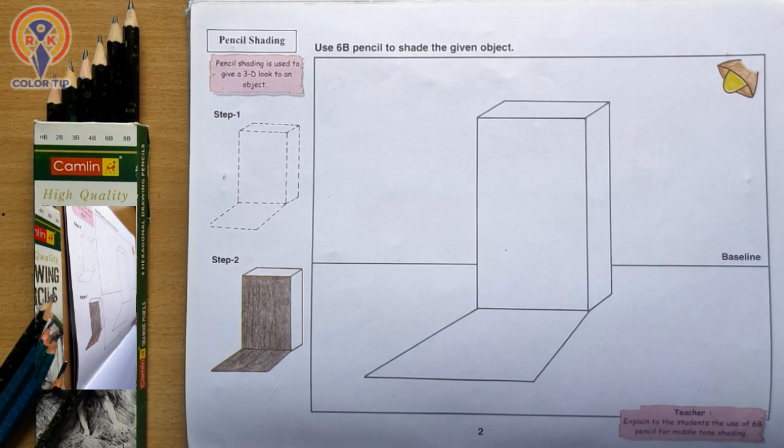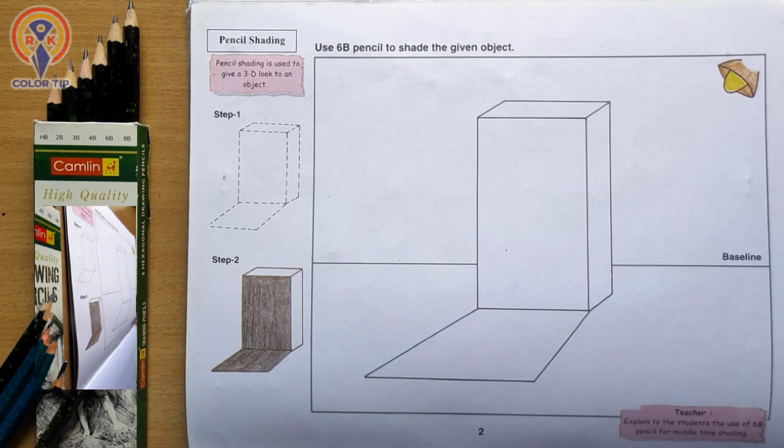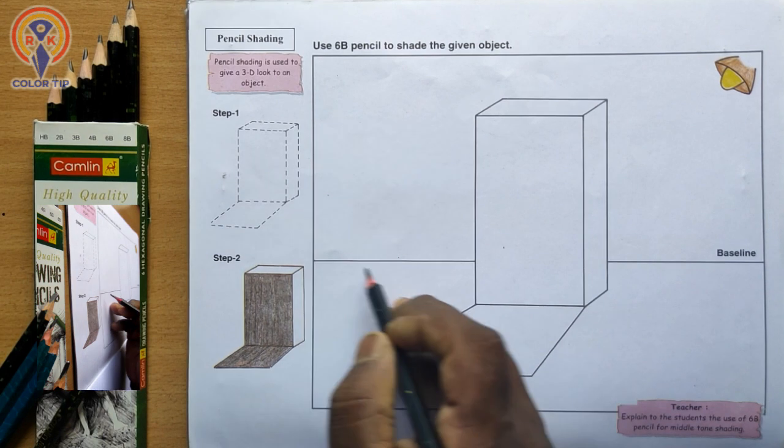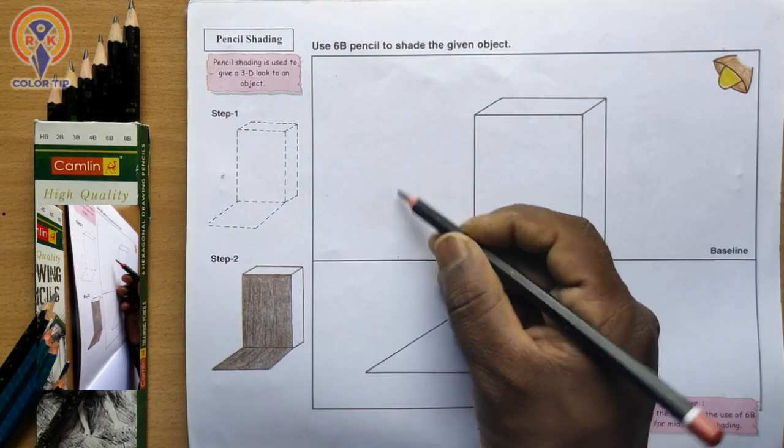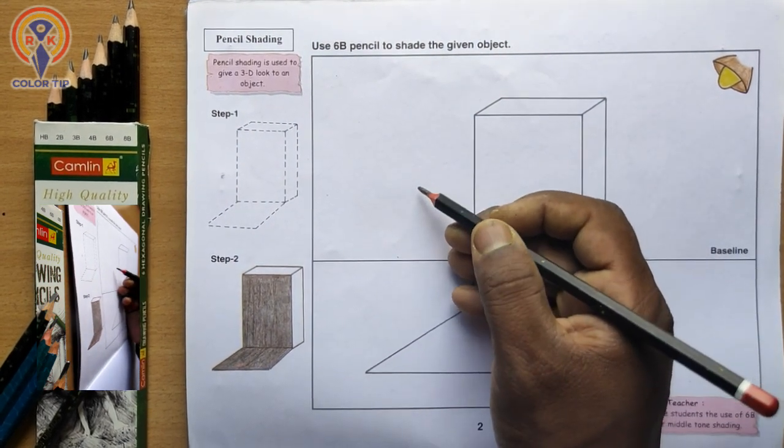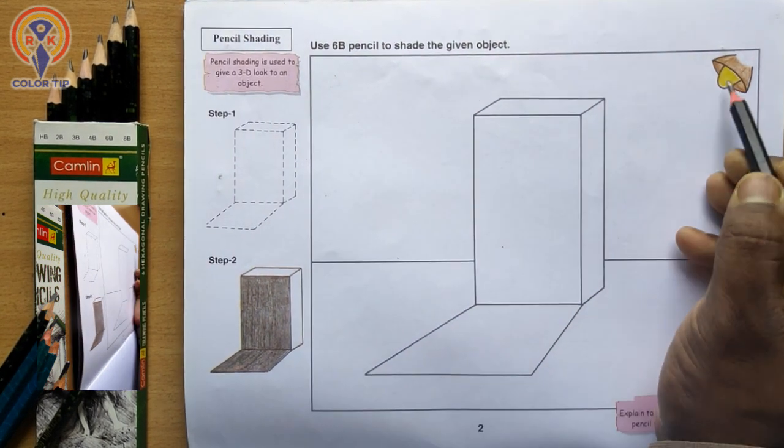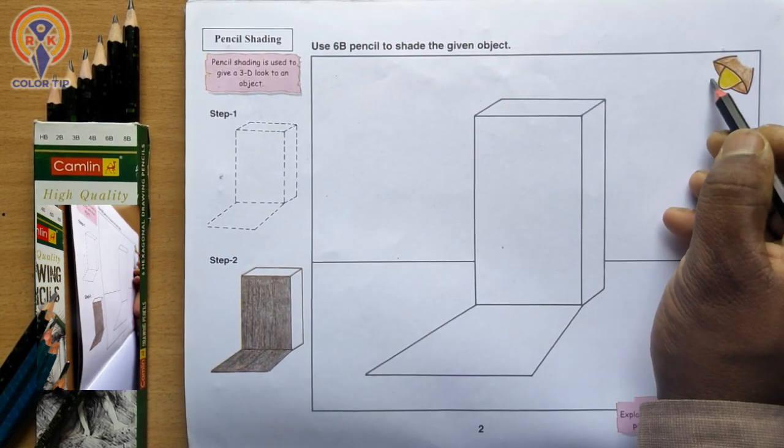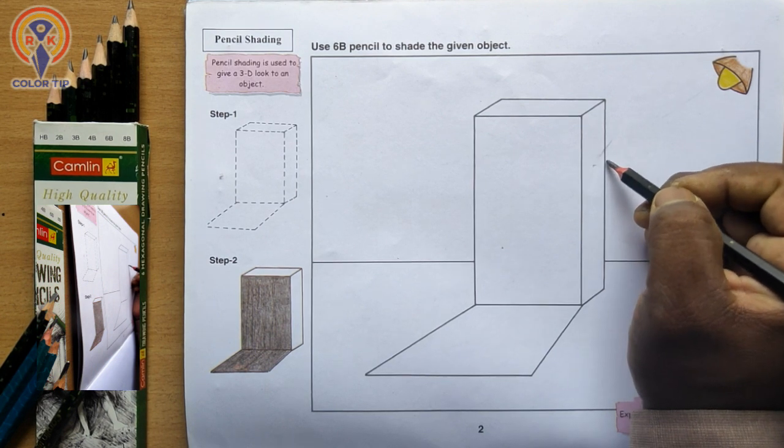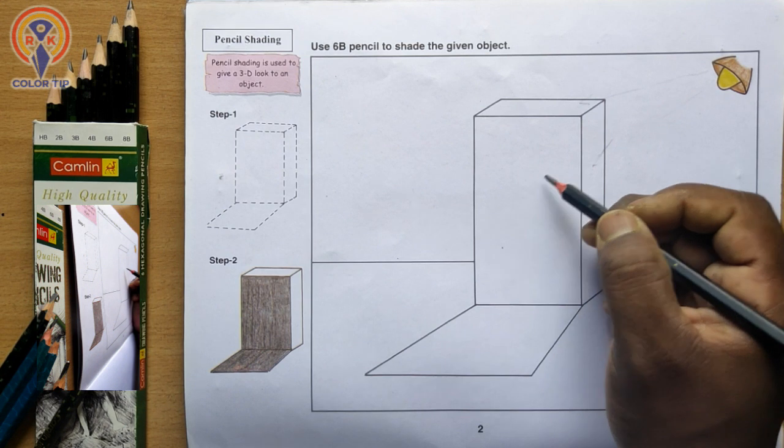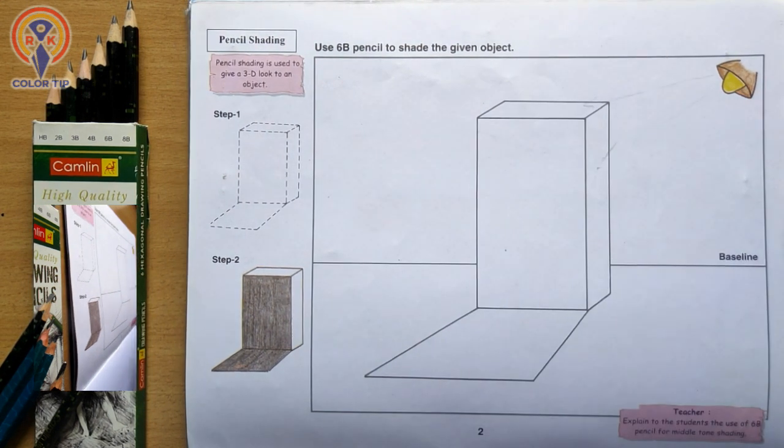A cuboid showing the light source from the top right corner, and the shadow is on the opposite side. An example is given here - a cuboid with a baseline. Above the baseline we call this part background, and below the baseline we call it foreground. Light is placed here. The light source may reach this part and this one, but this face is completely opposite to the light. Let's see an example.